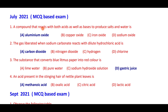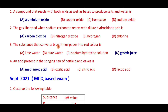A compound that reacts with both acids and bases to produce salt and water is aluminium oxide — this is an example for amphoteric oxide. The gas liberated when sodium carbonate reacts with dilute hydrochloric acid is carbon dioxide. The substance that converts blue litmus to red is gastric juice — an acid.